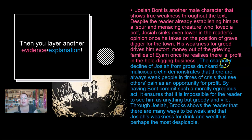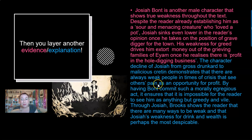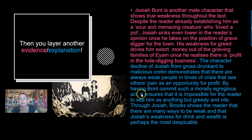The character decline of Josiah from 'gross drunkard' to 'malicious cretin' demonstrates that there are always weak people in times of crisis that see others' pain as an opportunity for profit. By having Brooks commit such morally egregious — egregious means really, really bad — acts, it ensures that it is impossible for the reader to see him as anything but greedy and vile. Through Josiah, Brooks shows the reader that there are many ways to be weak, and that Josiah's weakness for drink and wealth is perhaps the most despicable.